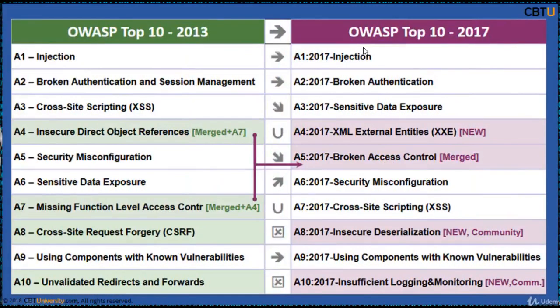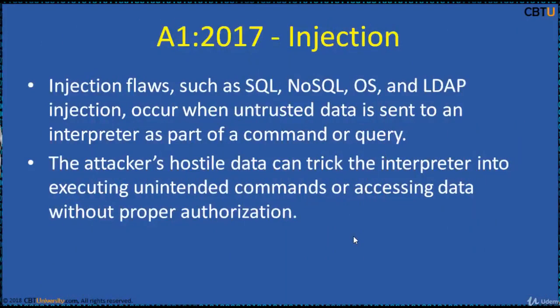These are the Top 10 risks identified in 2017, compared against the list in 2013. Injection flaws such as SQL, NoSQL, Operating System, and LDAP injection occur when untrusted data is sent to an interpreter as part of a command or query. The attacker's hostile data can trick the interpreter into executing unintended commands or accessing data without proper authorization.